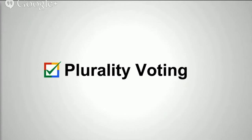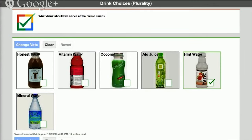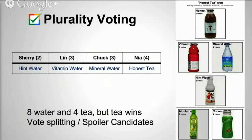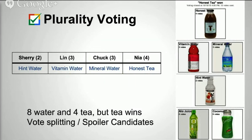Let's look at what happens with plurality voting. Everybody does the only thing they can do: vote for their top choice — Hint Water, Vitamin Water, and so forth. The results are actually not great. Eight people actually preferred water of some sort and four preferred tea, yet tea won because of vote splitting — all the water people split their votes among three different water choices and they all lost. This is the problem of spoiler candidates. The most famous example is probably the Bush-Gore-Nader election of 2000.